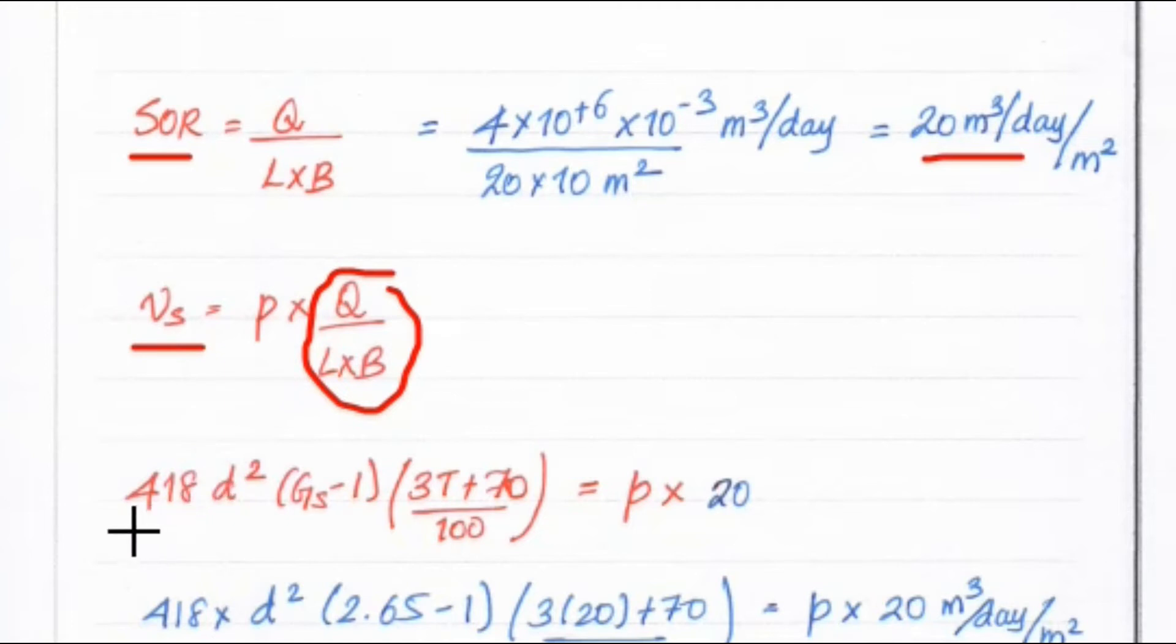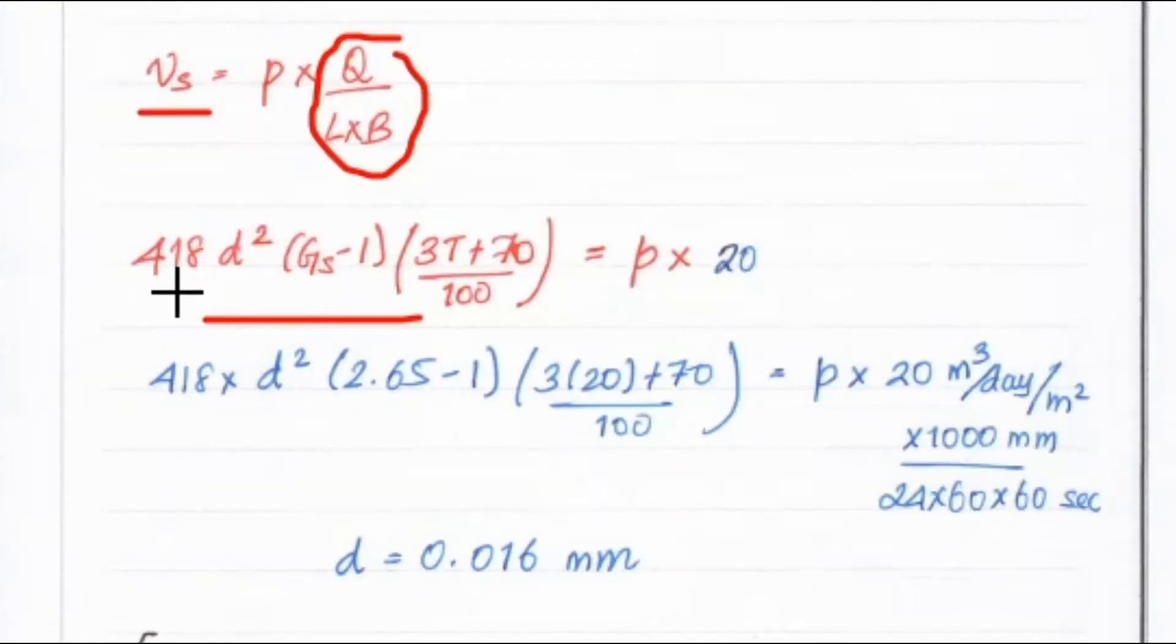For settling velocity we have 418 D square into GS minus 1 into 3T plus 70 divided by 100. Now we substitute all the values. So 418 into D square and GS value is given 2.65 minus 1 into 3 into temperature is given 20. So 3 into 20 plus 70 divided by 100 equal to P.